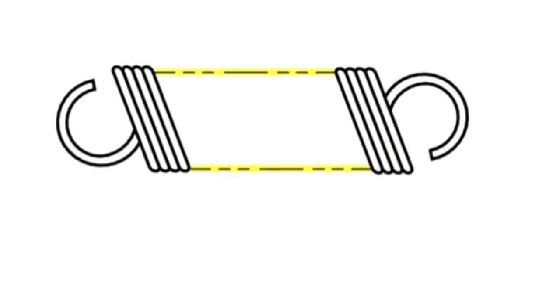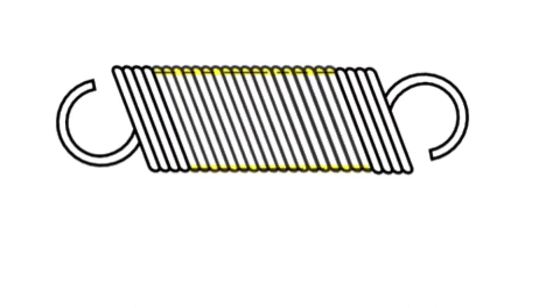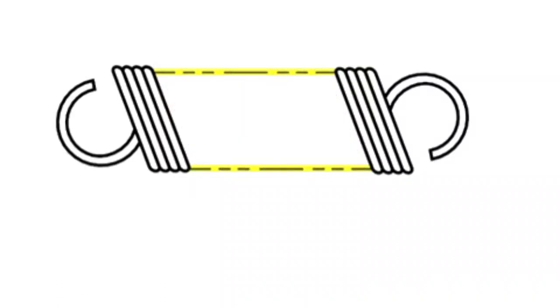Finally, phantom lines are used to show repeated detail. In this view, a spring is depicted. Since the coils of the spring are all the same, it's not necessary to draw them all. Instead, phantom lines are used to illustrate that the coils continue as originally shown.